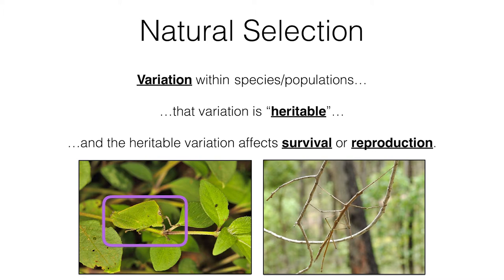We have variation, and that variation has to be caused by genetics. Most importantly, that genetically caused variation has to affect an organism's ability to survive and reproduce. For example, there's a little insect camouflaged on that plant. That camouflage is beneficial because it allows that insect to survive and then go on to reproduce. Here's a stick insect camouflaging itself very well on the twig it's climbing on.